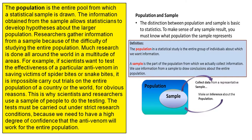For example, if scientists want to test the effectiveness of a particular anti-venom in saving victims of spider bites or snake bites, it is impossible to carry out trials on the entire population of a country or the world for obvious reasons. This is why scientists and researchers use a sample of people to do the testing.